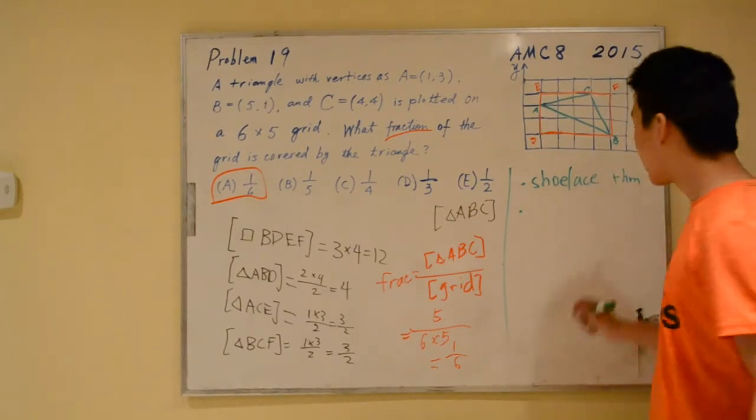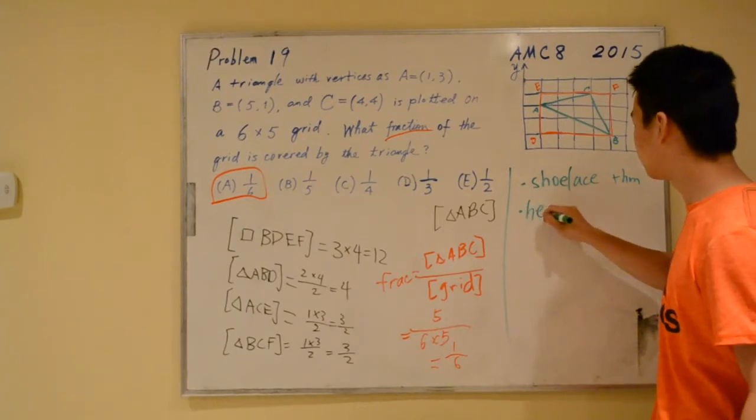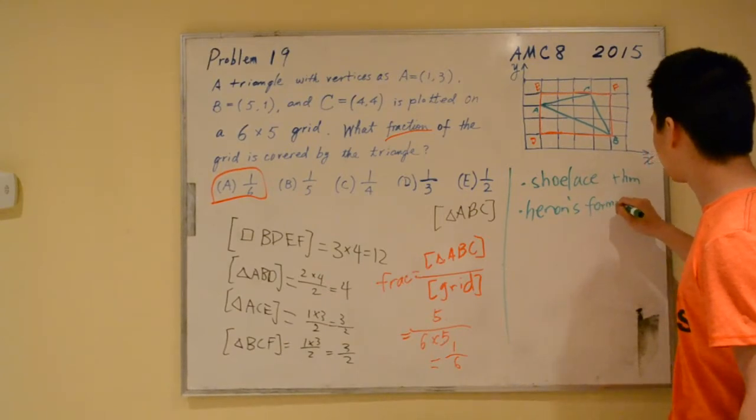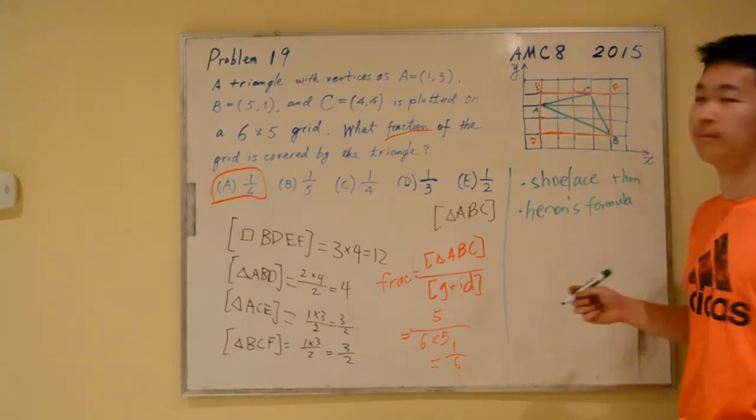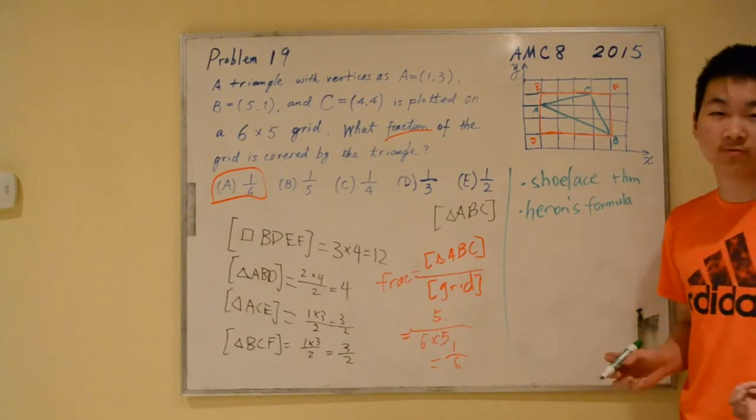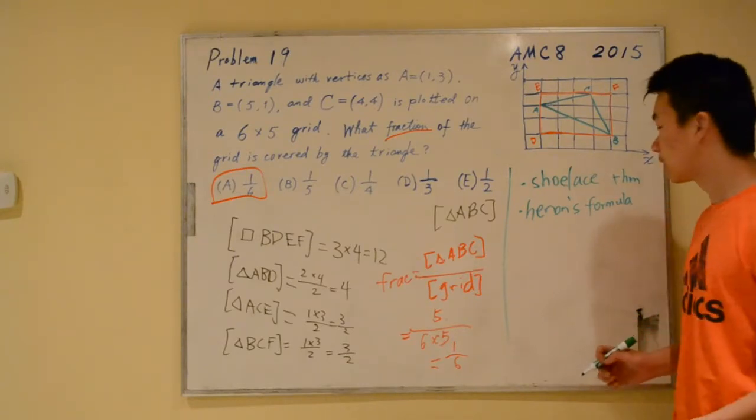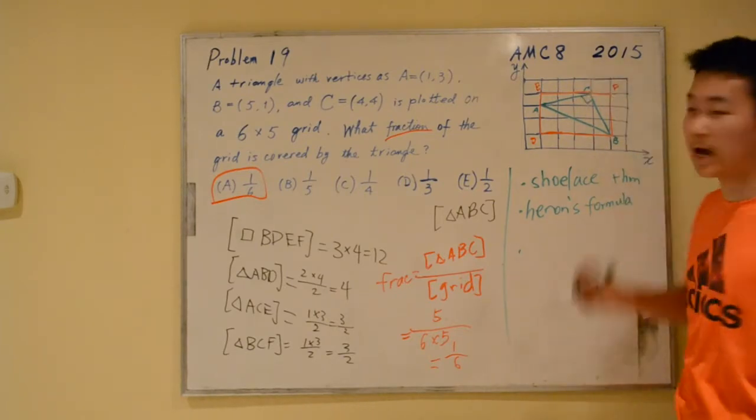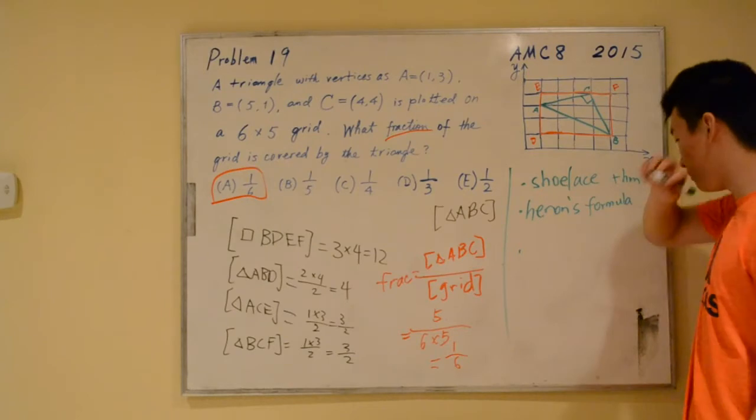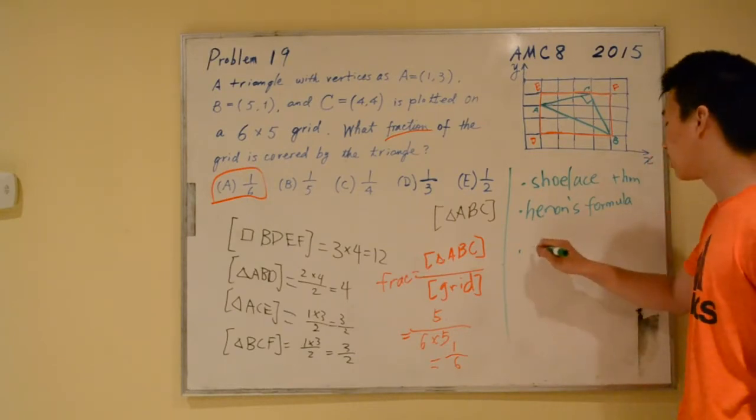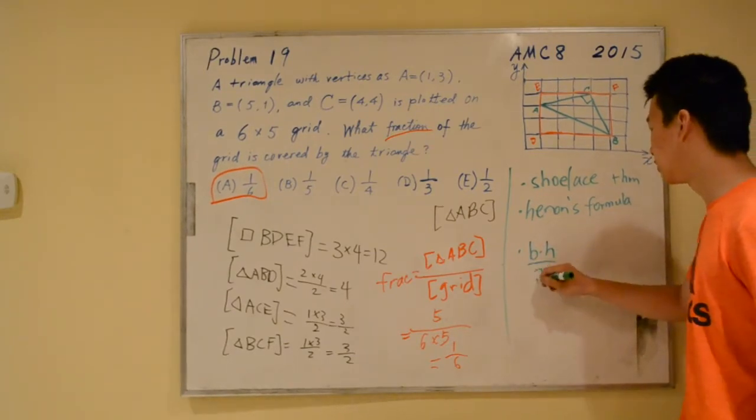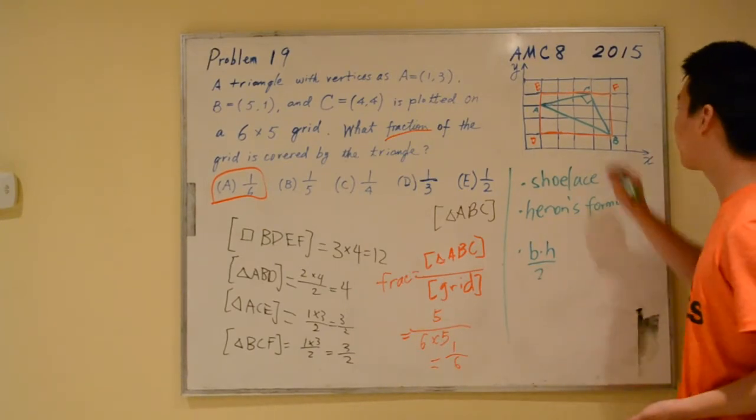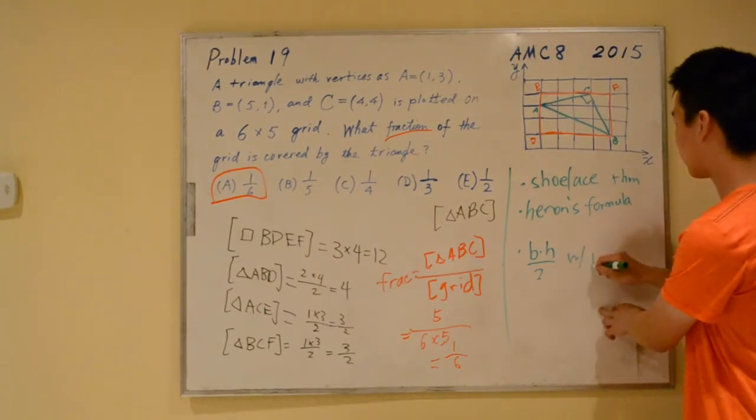The next one is Heron's formula. It's very tedious, but it works for any given triangle. The next one, if you notice that ABC is actually a right triangle, you can use the regular base times height over 2. However, it's not as simple as it seems because you have to use Pythagorean theorem on each of the lengths.